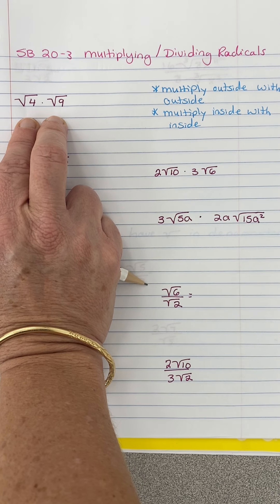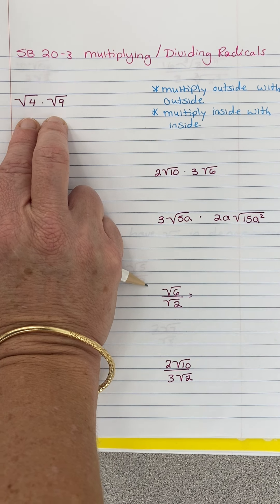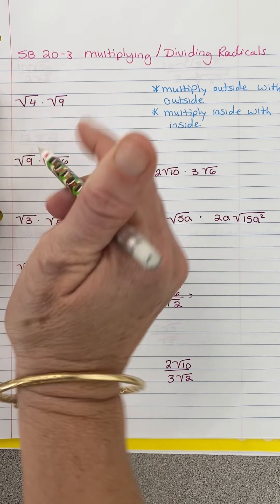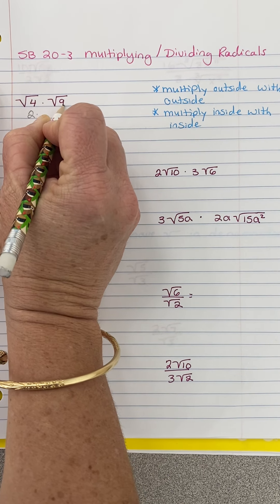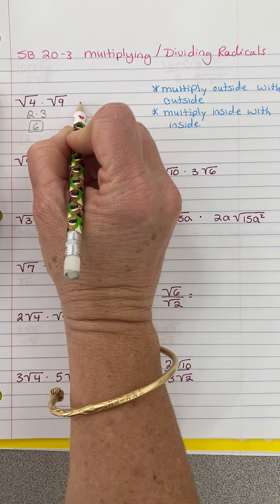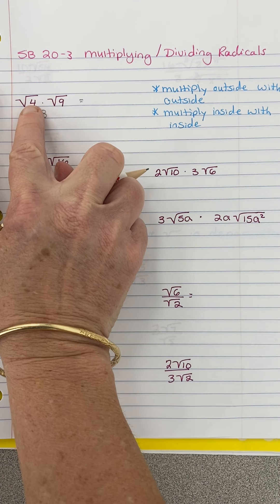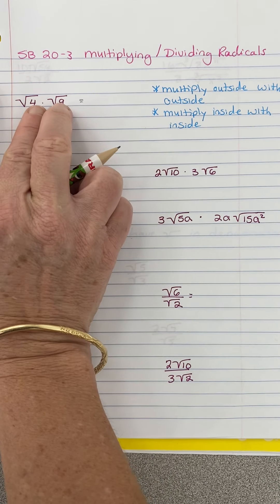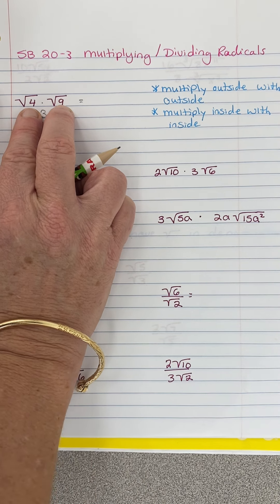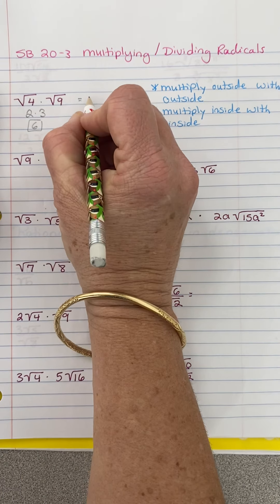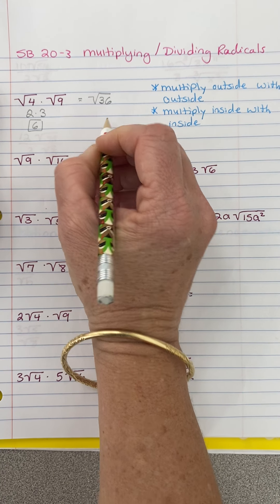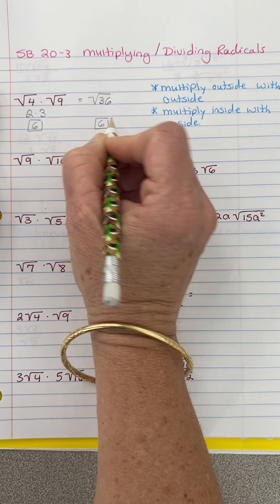Usually I like to simplify first if I notice it, and sometimes I multiply first. So right here, the square root of 4 is a perfect square, that's 2. The square root of 9, that's a perfect square, I get 3. 2 times 3 is 6. If I didn't notice those were perfect squares, I would say 4 times 9 under the radical — you can multiply them. You get 36, and the square root of 36 is 6. Same answer either way.